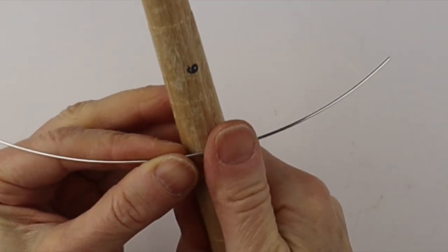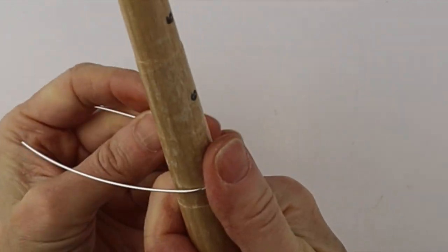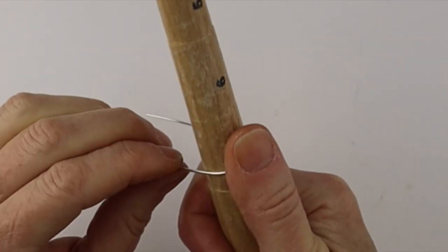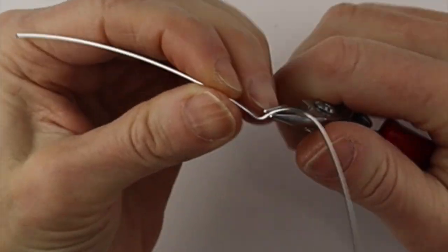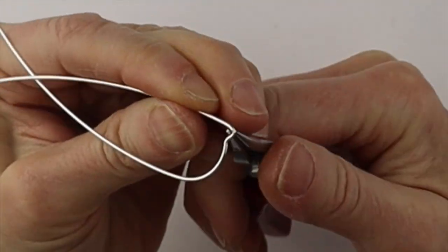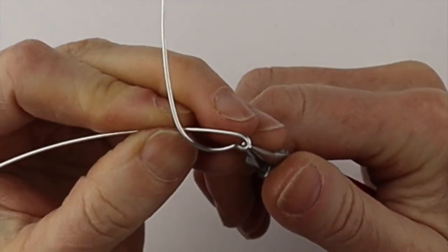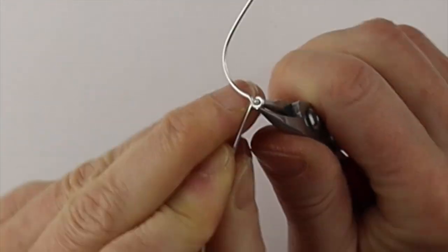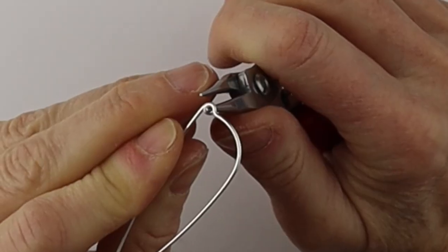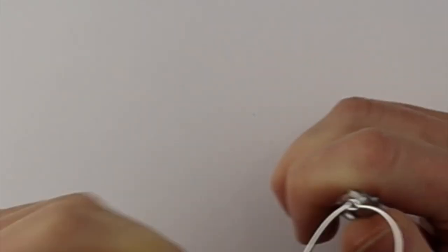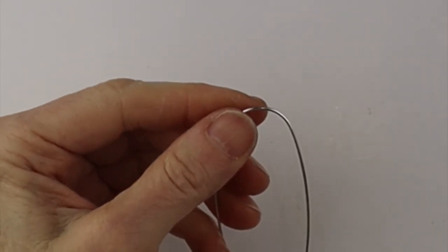And now we're going to get our 18 gauge wire. Wind it around the ring mandrel and I'm going to do a little loop in the ring band wire. This is going to hold the coil in place. So we'll just wind it around and back so that little loop is centered on the wire.